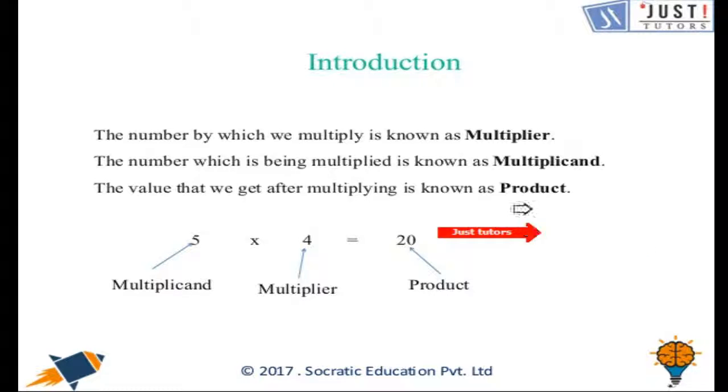We have three main parts of multiplication: multiplier, multiplicand and product. The number by which we multiply is known as multiplier. So in this one 4 is multiplier.